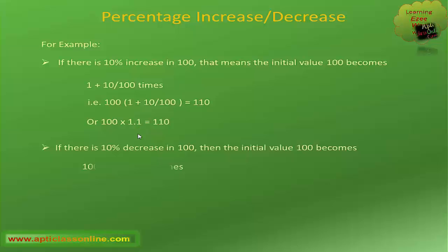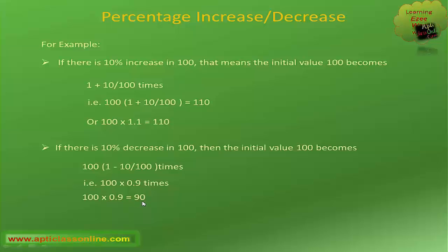Similarly, if there is 10 percent decrease in 100, then after applying this formula, the initial value 100 becomes 100 into 1 minus 10 divided by 100, that is 0.9 times. So if you multiply 100 by 0.9, you will get the 10 percent decrease in 100, which equals 90. What we have seen in these two examples is that there is a corresponding multiplying factor with which, if you multiply the initial value, you can directly get the final value after the required percentage increase or decrease.